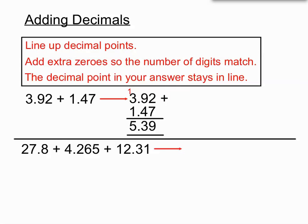Even if we've got some more complicated ones here we'll just try and line everything up so our decimal points are lined up even if our numbers are a little bit out of whack there. We're allowed to add extra zeros so that the number of digits in our question match.